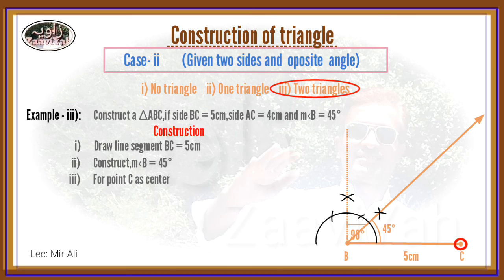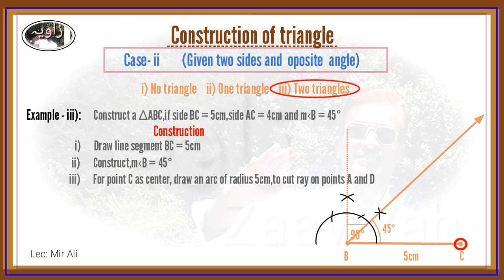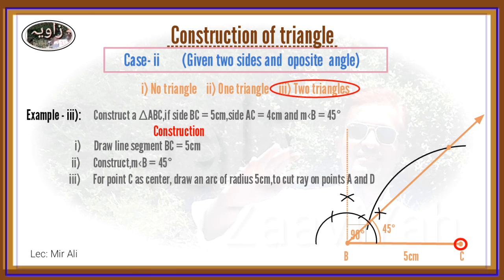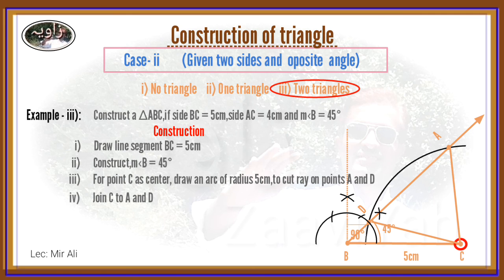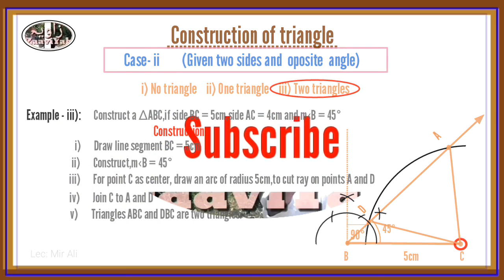Taking point C as center, draw an arc with radius 4 cm. This arc intersects the ray at two points — point A1 and point A2. Therefore two triangles are formed: triangle A1BC and triangle A2BC. These are the required triangles.